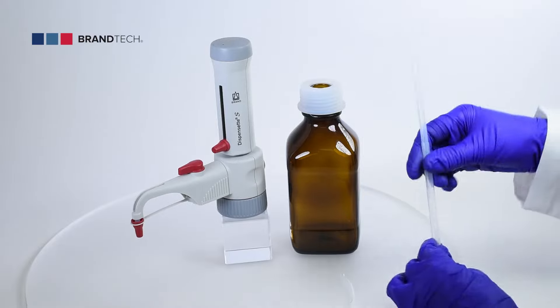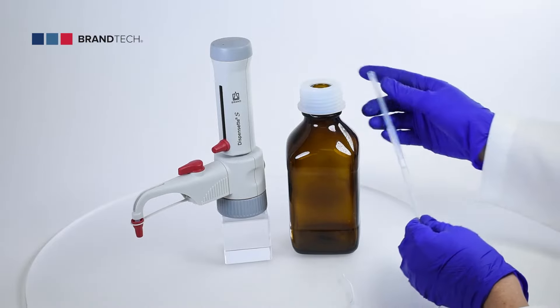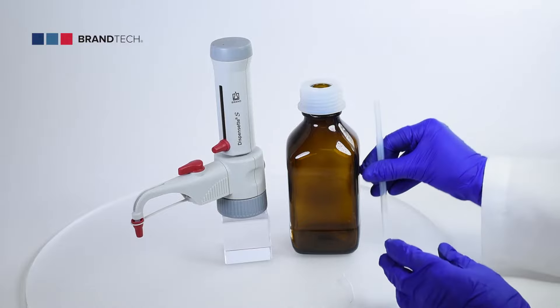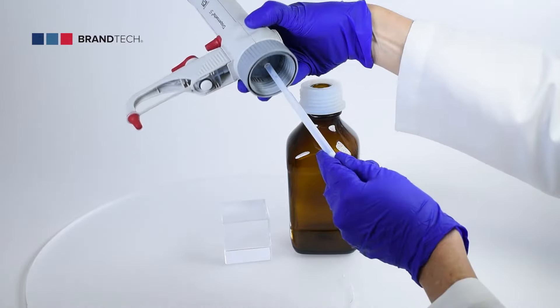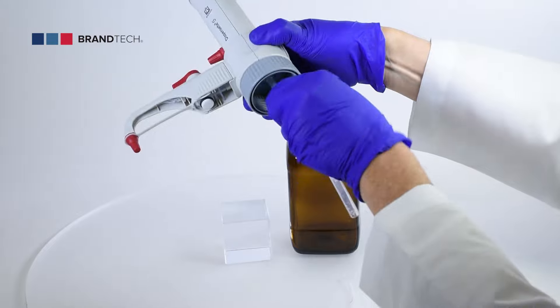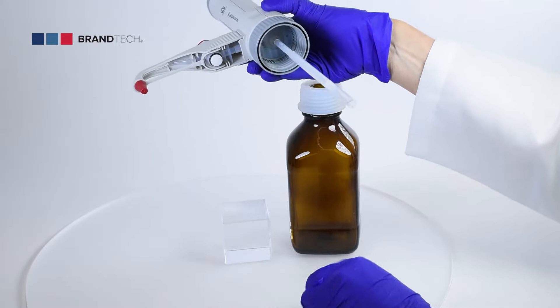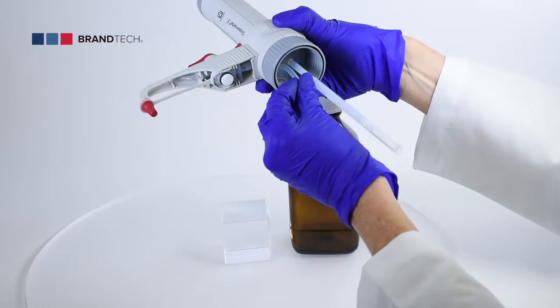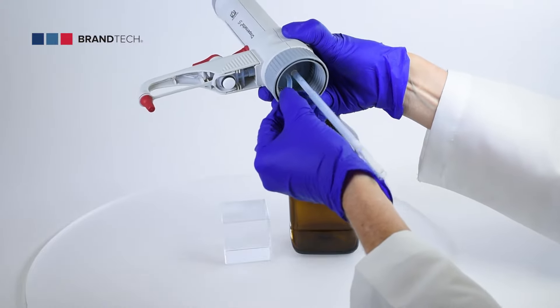Adjust the length of the telescoping filling tube to the height of your bottle and attach. If your dispenser uses a discharge tube with a recirculation valve, the recirculation tube must also be installed. Insert the tube with the opening pointing outward.